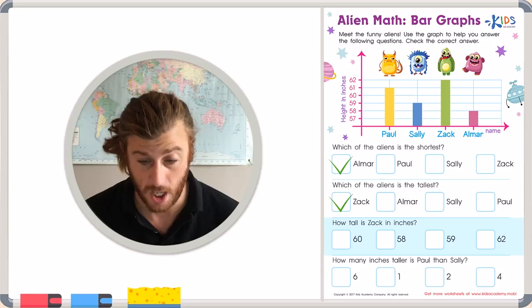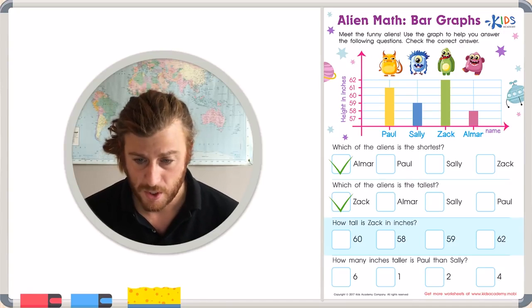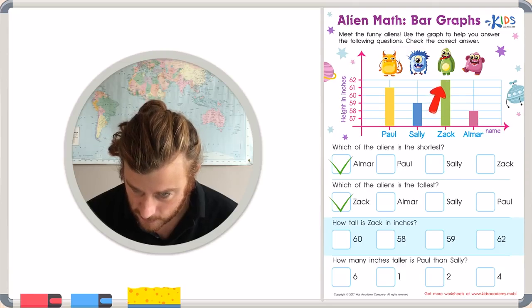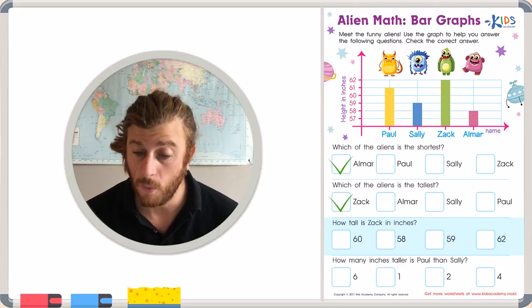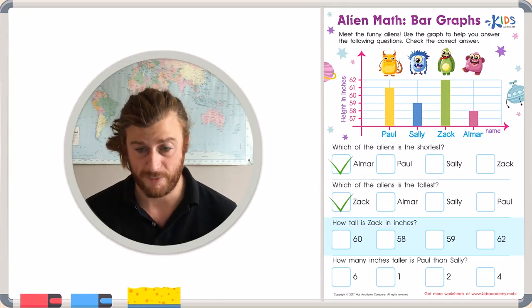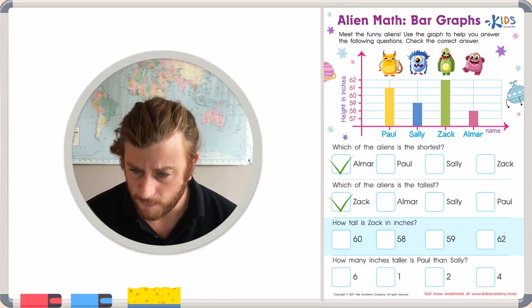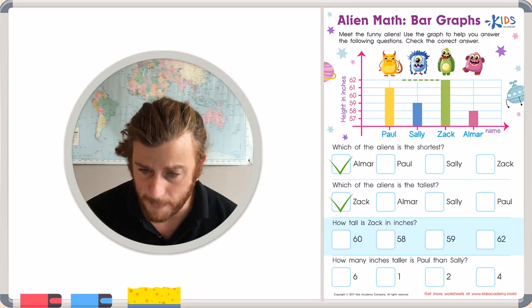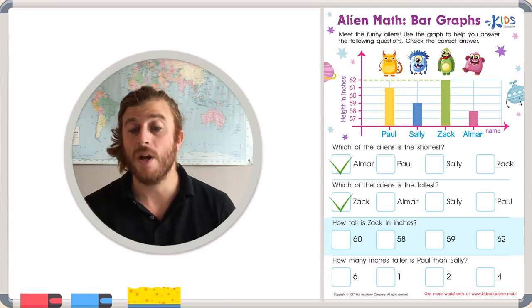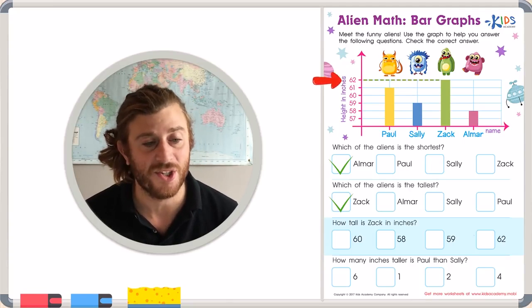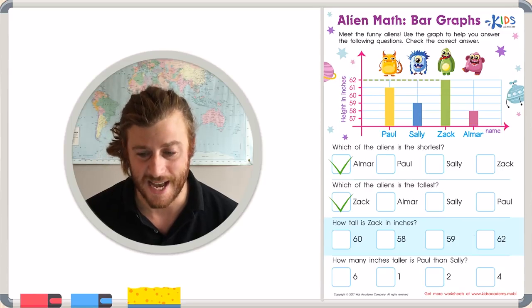Question number three asks us to focus on Zach. So let's focus on Zach. Zach is our green alien right here. And the question wants to know, how tall is Zach in inches? So to find out how tall Zach is in inches, we can look at our bar, take it all the way to the top and see what line it perfectly matches up with. And we can see that Zach is exactly 62 inches tall. Let's put a check in Zach's box.